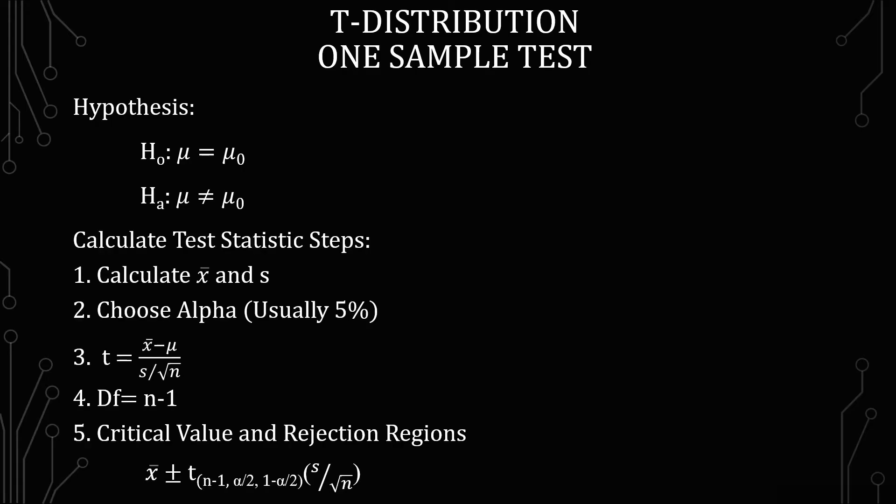So the next step is to actually calculate the test statistic. You're going to need to know how to do a sample mean and a sample standard deviation. If you don't know how to do that, here are some videos for you to check out. The next is to choose an alpha, which is usually 5%. So 95% confidence interval gives you a 5% alpha or a 0.05.